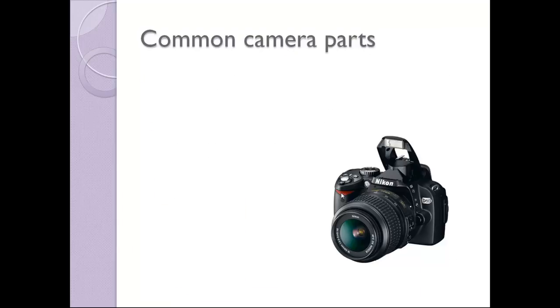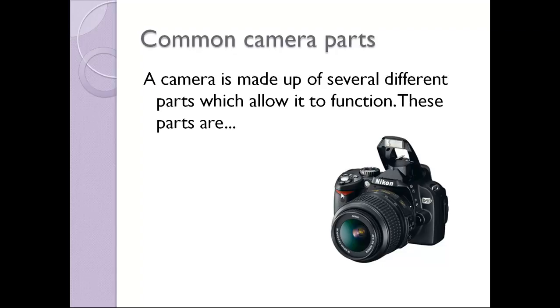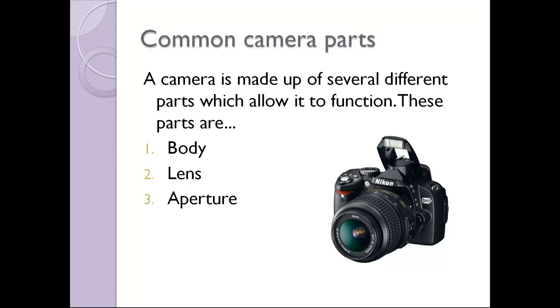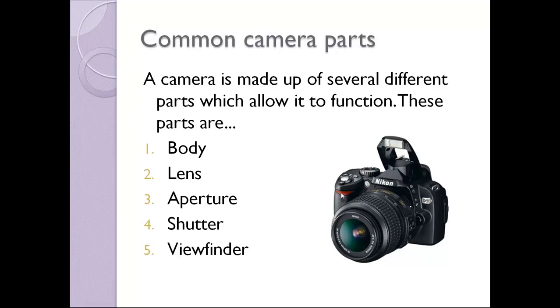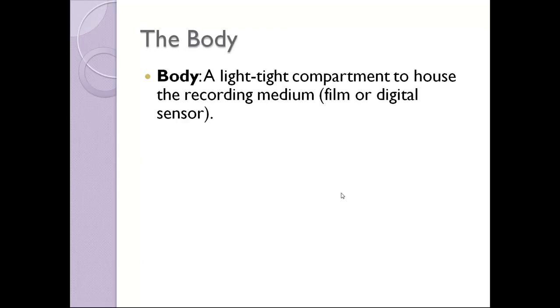Common Camera Parts. A camera is made up of several different parts which allow it to function. These parts are the body, the lens, aperture, shutter, and the viewfinder. Let's start with the body. The body is a light-tight compartment to house the recording medium, which can either be film or the digital sensor.